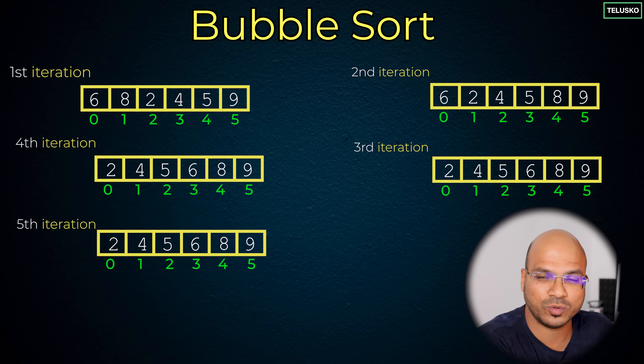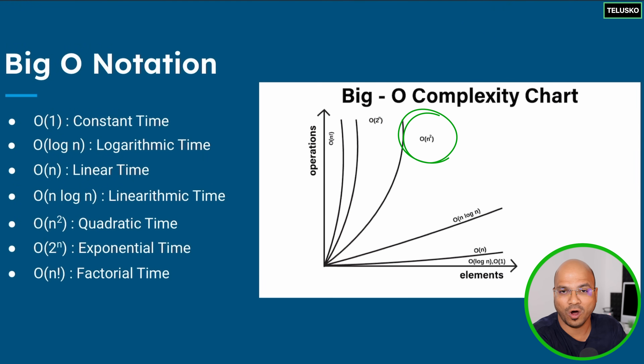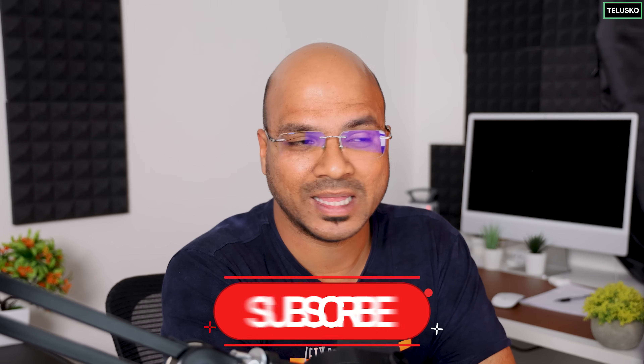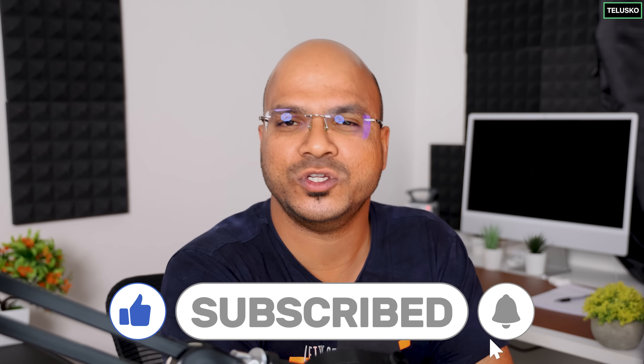Even if it is sorted, the algorithm will still check — we reduce swapping but not checking. That's why bubble sort is not efficient. The time complexity is O(N²) because you use two loops: one for the iterations, and an inner loop for comparing values at each iteration. With only 6 elements it's manageable, but imagine 20 or 30 values — the number of steps becomes large. So bubble sort is not efficient, but easy to understand. We'll convert this into code in the next video.